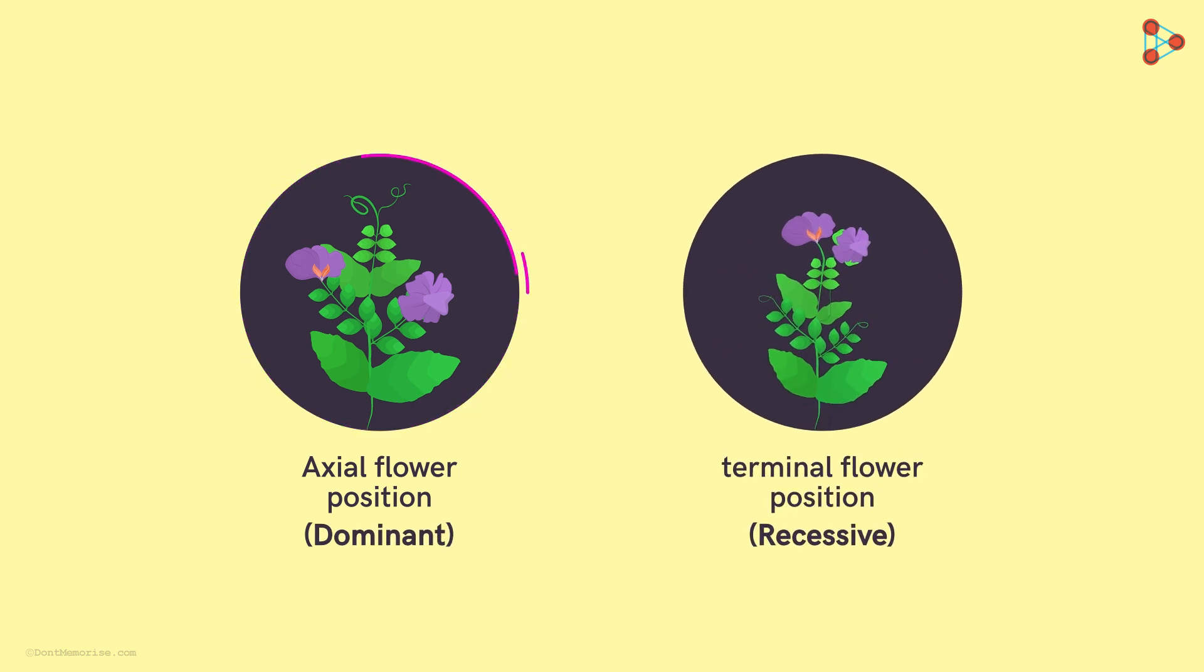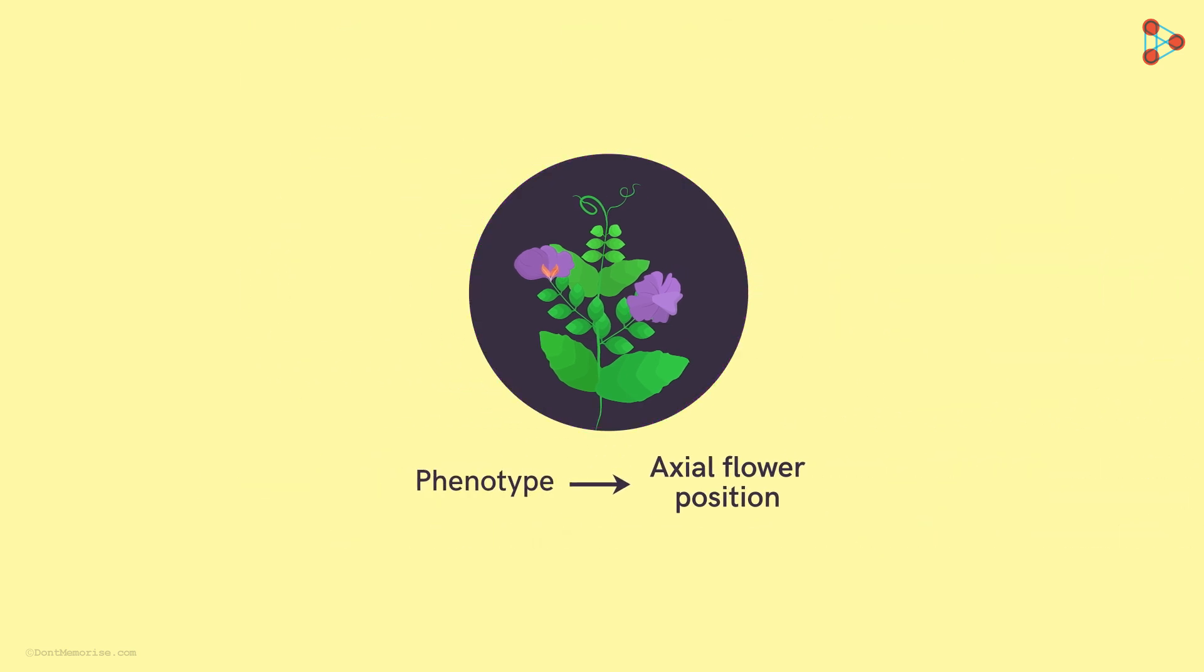So this plant has the dominant genes for the character flower position. Now this is the phenotype of the plant which is understood by a mere glance at it. But can you tell me what the genotype of this plant is?